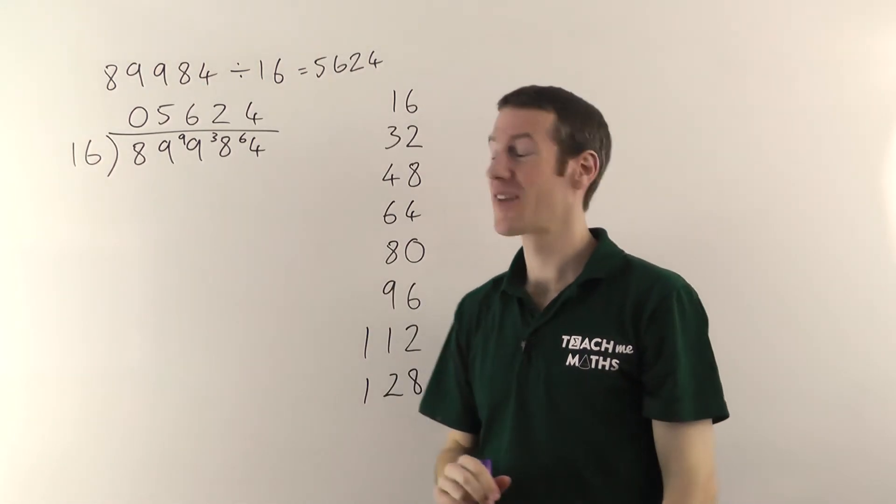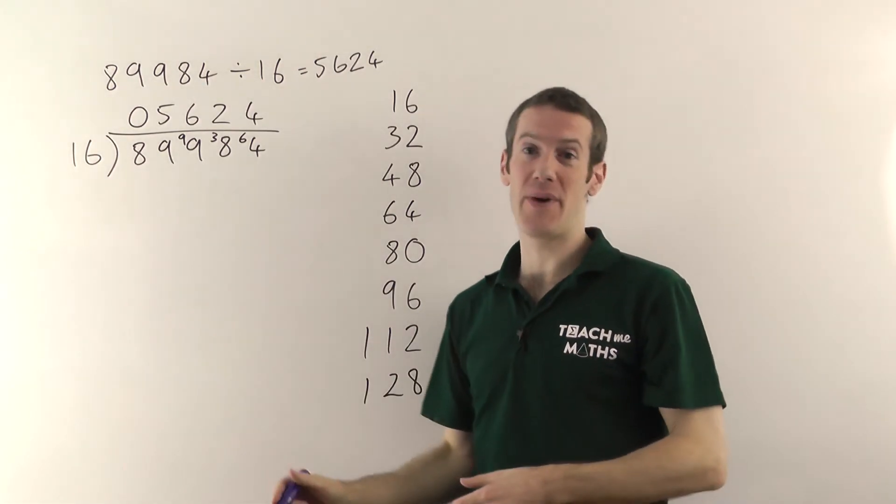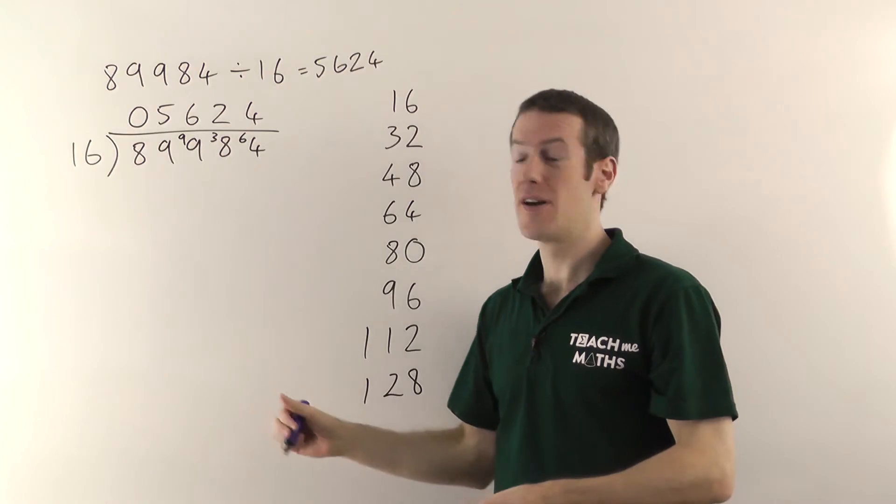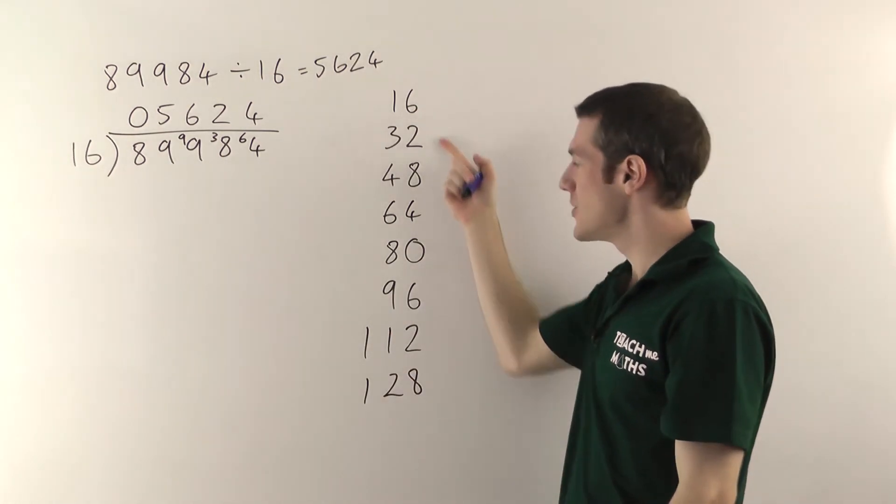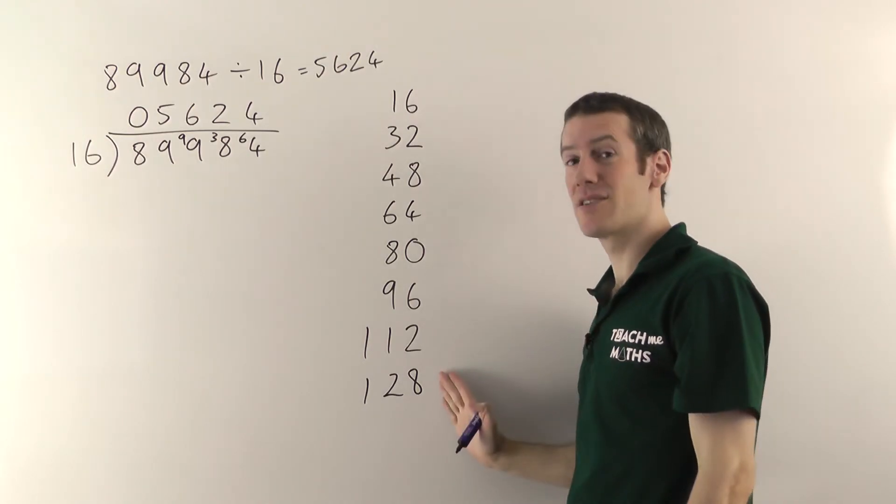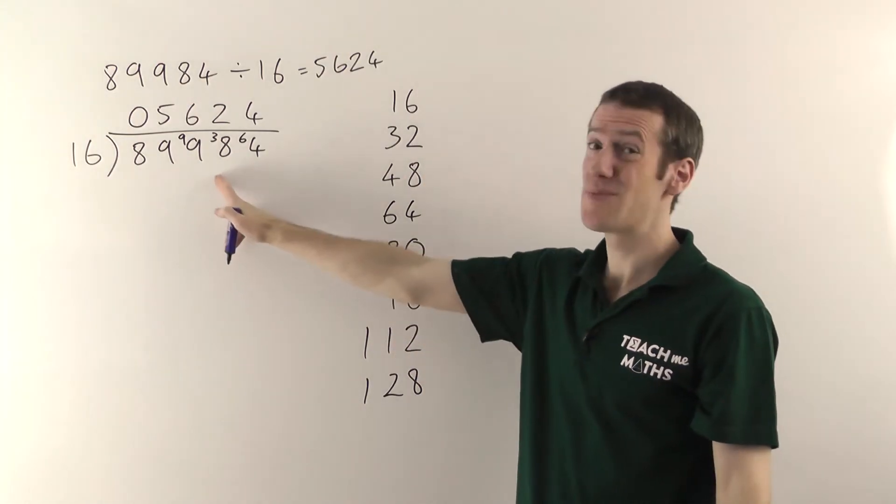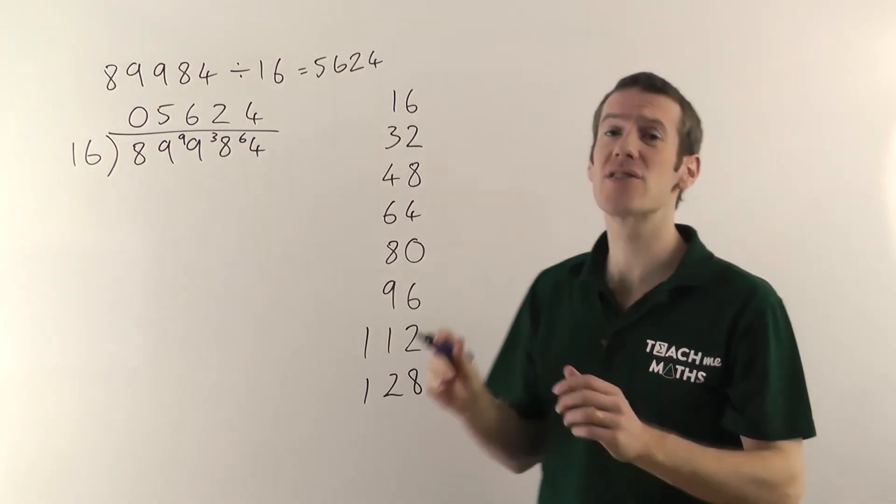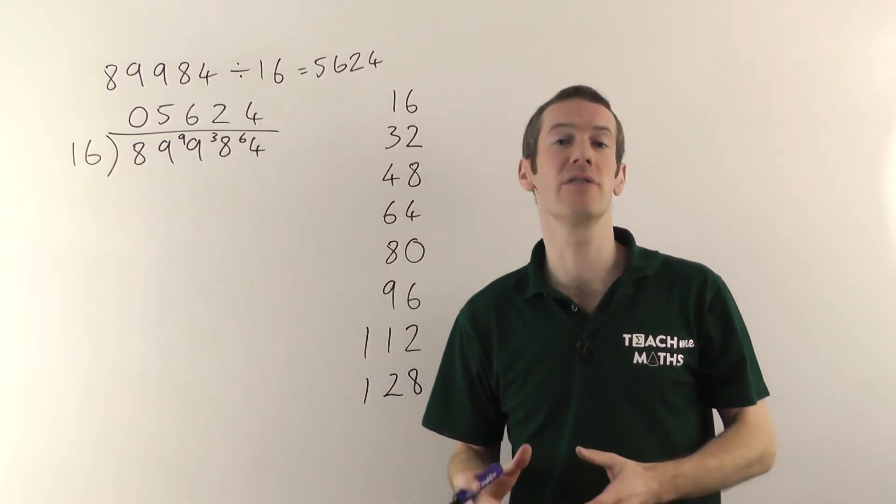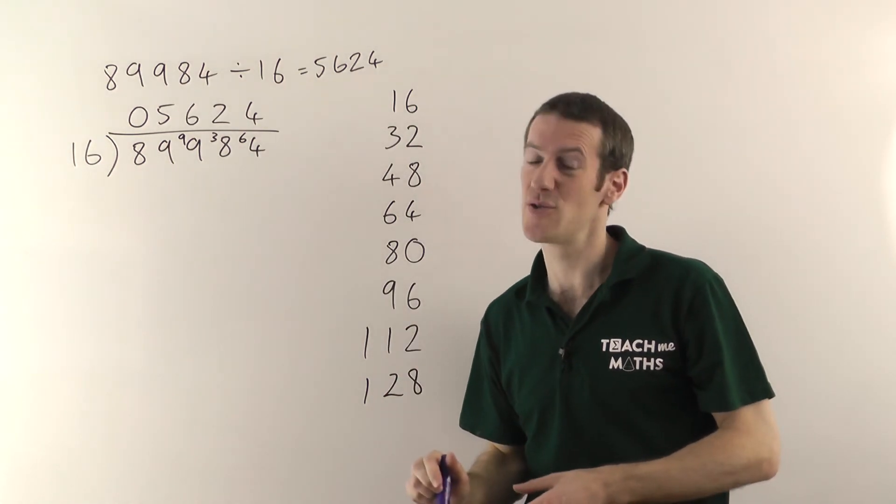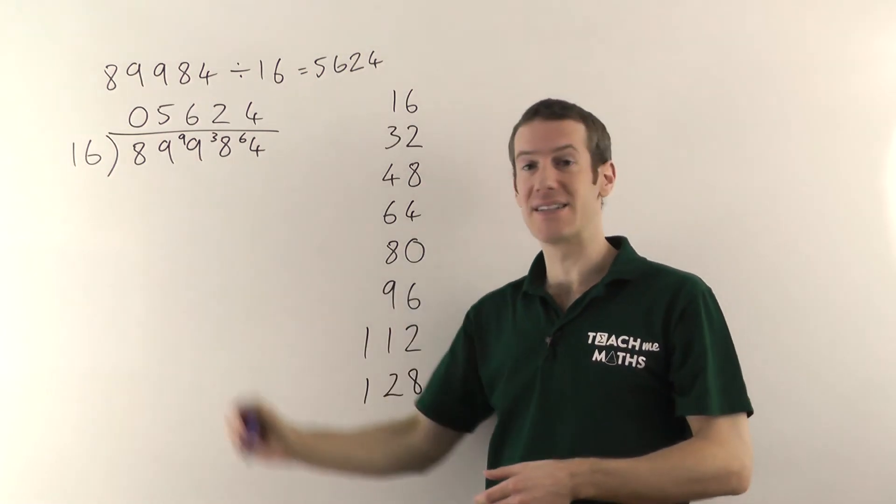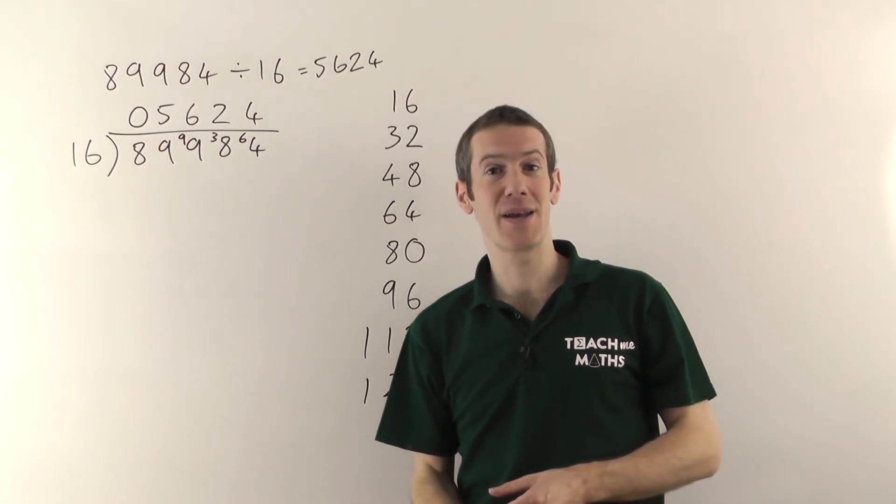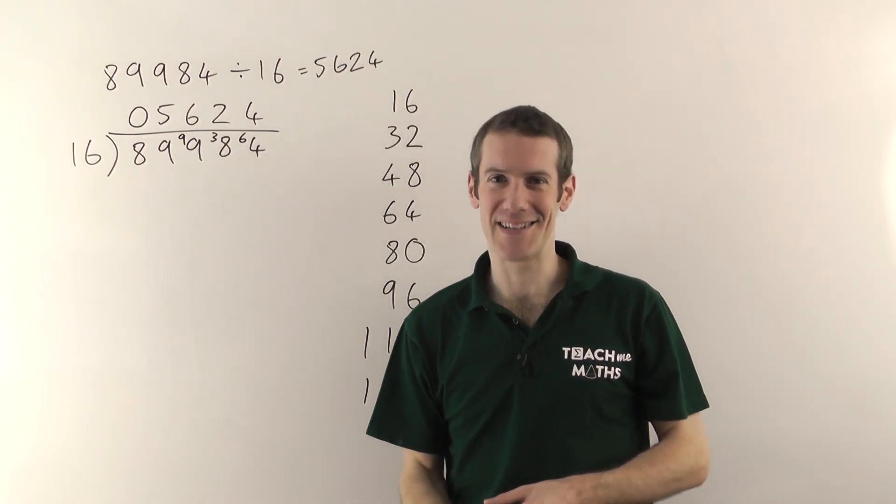Now personally I much prefer that method of just doing short division for any of the long division questions. The only extra thing you need is you have to work out the times tables first. Once you've got that, this becomes really easy. So I'd strongly recommend if you ever need to do any long division questions, just do it by short division instead. My name is Jonathan Hicks and you've been watching Teach Me Maths.